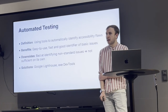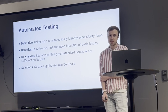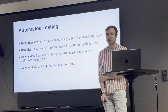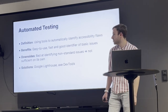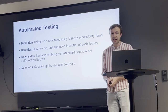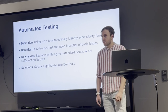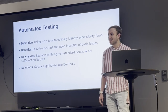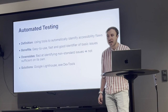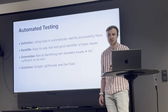When you're done identifying focus areas, you proceed with automated testing — using tools to identify accessibility flaws. The benefits are that it's very easy to use, straightforward, fast, and a really good identifier of basic issues. The downside is that automated tools are bad at identifying anything uncommon, so you can never rely solely on automated testing, even in emergency situations.